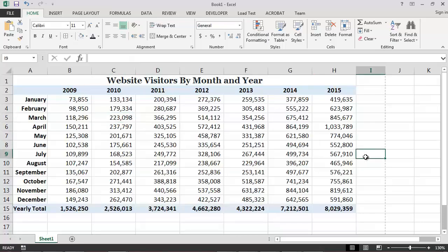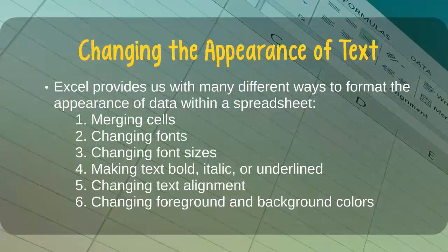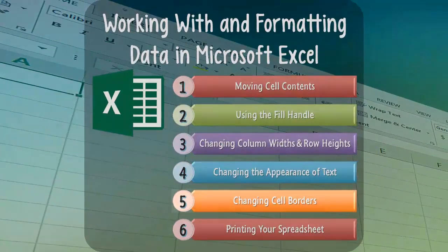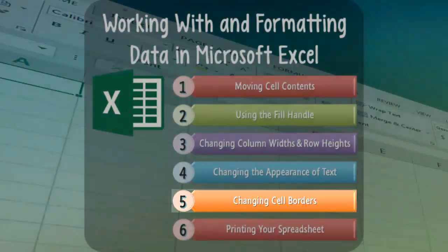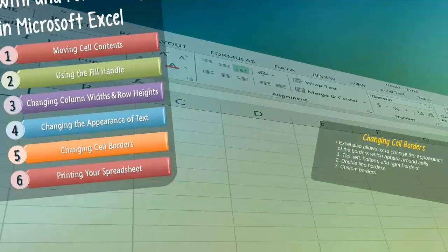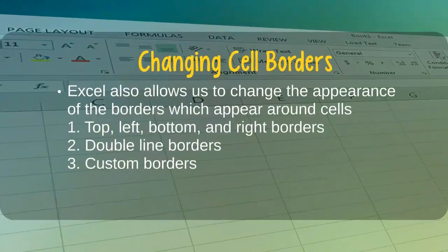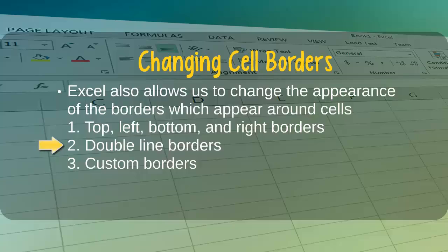Hopefully you will agree that our report is starting to look a lot better. Next, let's learn how to change the appearance of cell borders in an Excel spreadsheet. Excel allows us to change the way that the borders around cells appear so that we can easily highlight certain information or create visual divisions between the data on our spreadsheet. We can do this by changing the top, left, bottom, or right borders of one or more cells. Excel also allows us to create double line borders such as those that we might find on financial or accounting reports, and if we are dissatisfied with these basic options, Excel also allows us to create custom borders.